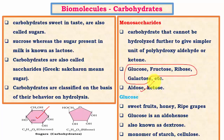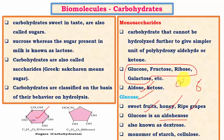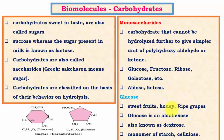Aldose and ketose are examples of monosaccharides. Glucose is the most important monosaccharide — it is obtained from sweet fruits, honey, and grapes. Glucose is an aldo hexose: hexose means a molecule with six carbon atoms, and aldo refers to the aldehyde group (CHO). So glucose has six carbon atoms and an aldehyde group. Glucose is also known as dextrose.